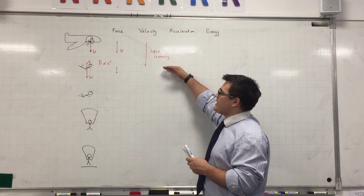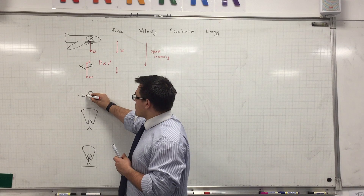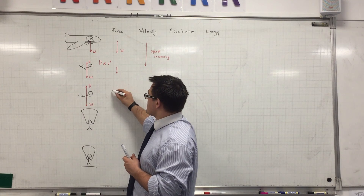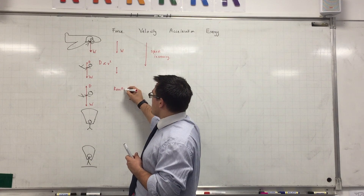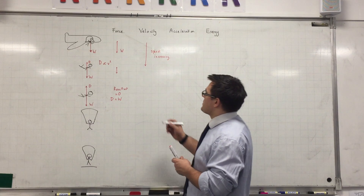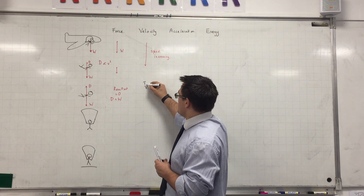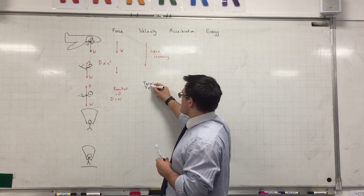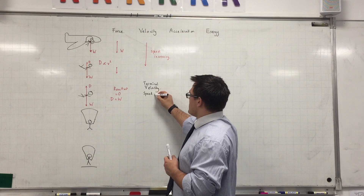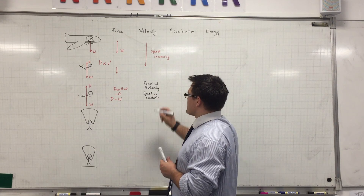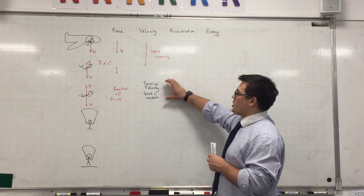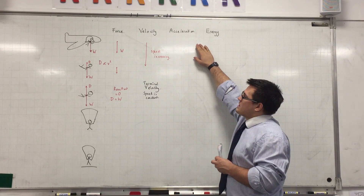This will keep happening until we reach stage three, where your drag keeps increasing until it is equal and opposite to your weight. At this stage the resultant force is equal to zero because the drag is equal to the weight. We describe this point as terminal velocity. Terminal velocity means your speed or velocity is constant — you can also say it's at a maximum because it's not going to increase anymore since the drag is now equal to your weight.